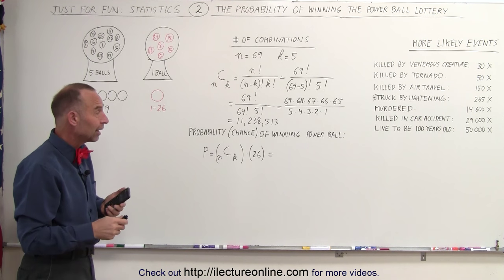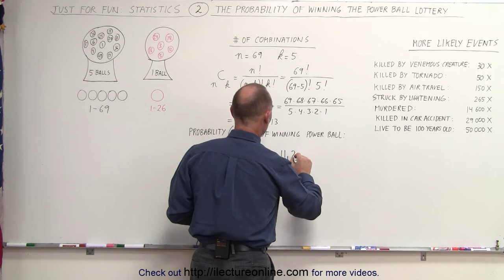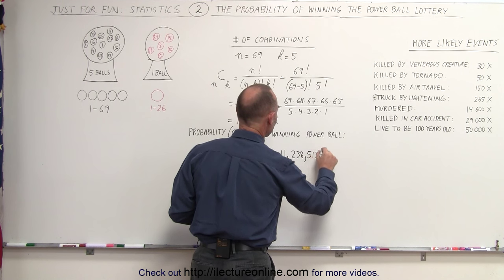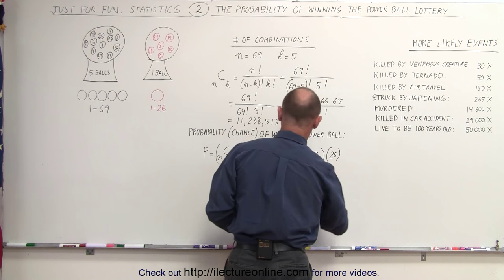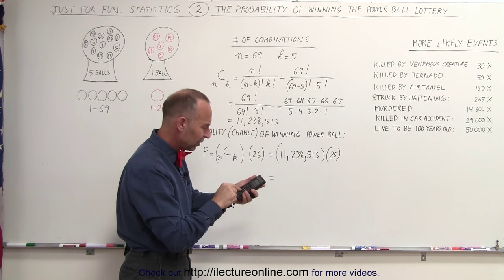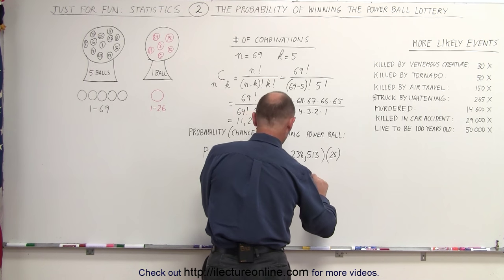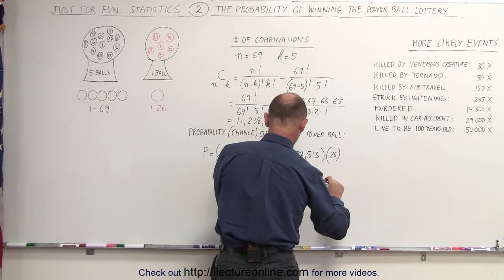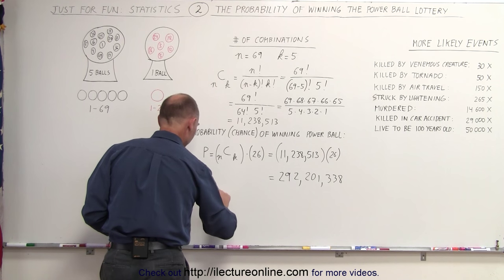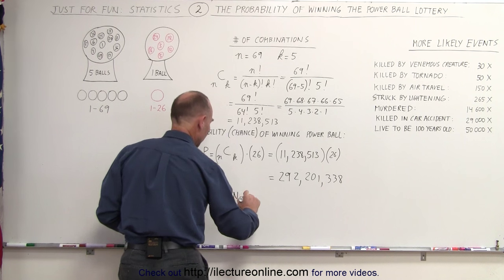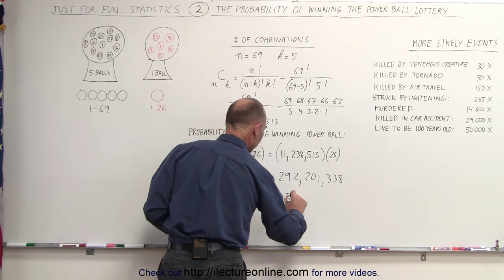So the total probability of winning the grand prize would be the probability of getting all 5 correct, which is 11,238,513, and multiplying it times 26. So the total chance is 1 in 292,201,338. So you buy 1 ticket, you have 1 chance in 292,201,338.